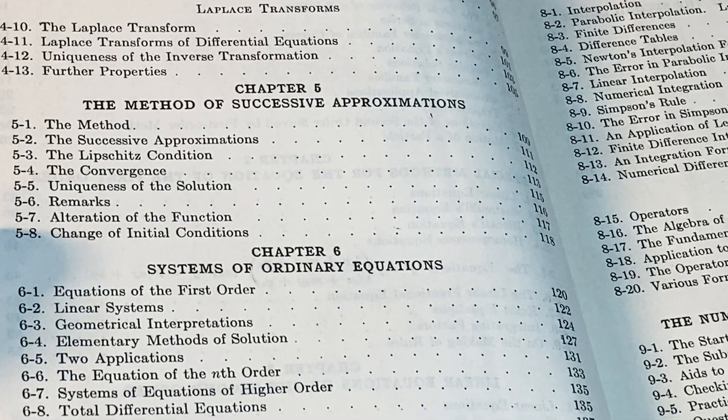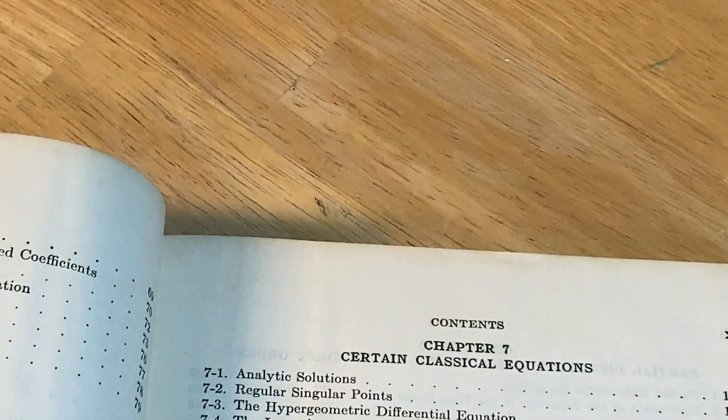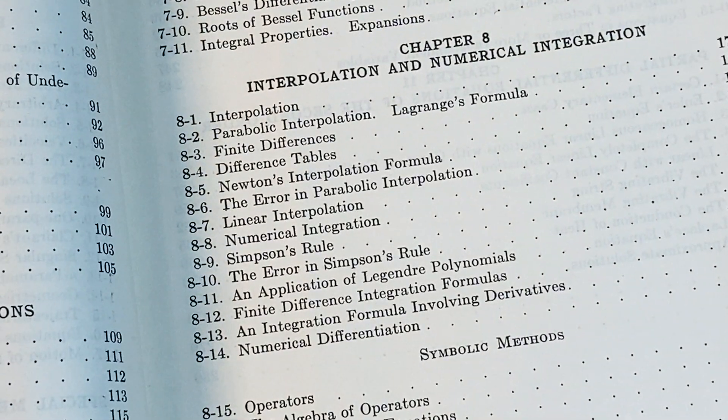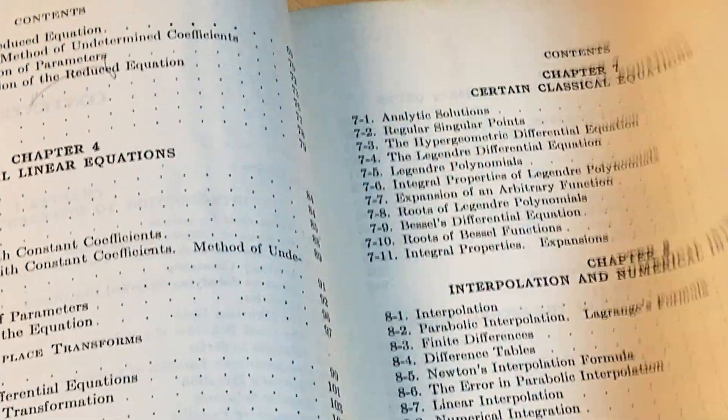Six is systems of ordinary equations. Seven is certain classical equations. Interpolation and numerical integration. And then we have the numerical solution of differential equations.